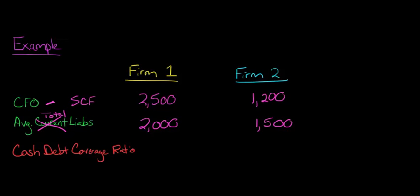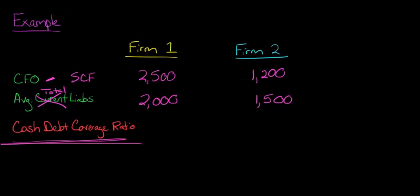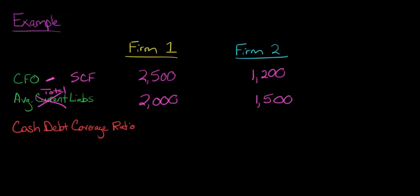We want to compute the cash debt coverage ratio for these two firms. We take the cash flow from operations as our numerator, and instead of average current liabilities as in the current cash debt coverage ratio, our denominator is now average total liabilities. Dividing $2,500 by $2,000 for firm 1 gives a cash debt coverage ratio of 1.25. For firm 2, dividing $1,200 by $1,500 gives a cash debt coverage ratio of 0.8.